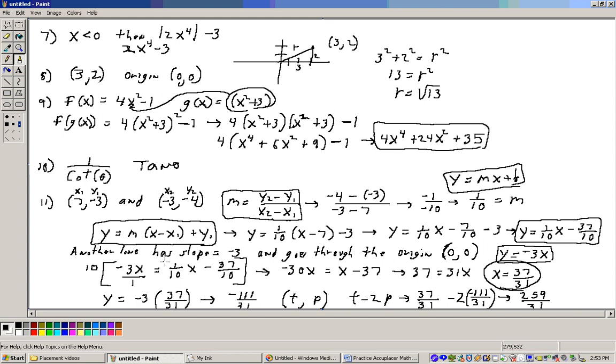It says there's another line that has a slope of negative 3 and goes through the point, the origin. The origin is (0,0), and the form of a line that we got this equation in and that we'll need to get the other equation in is y equals mx plus b. So, this is another form of a line that you should know. We have the slope formula, the slope-intercept form of a line, and we have the point-slope formula. All are coming up here.